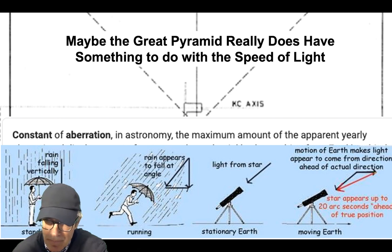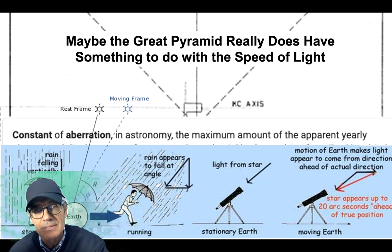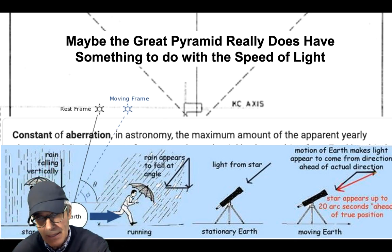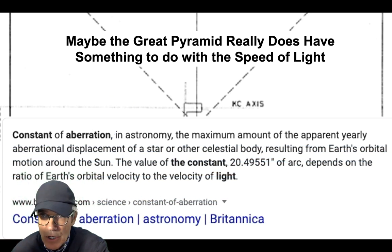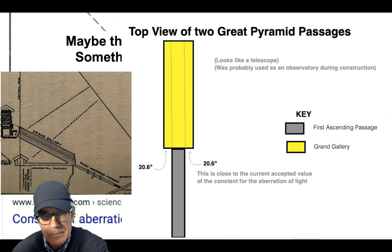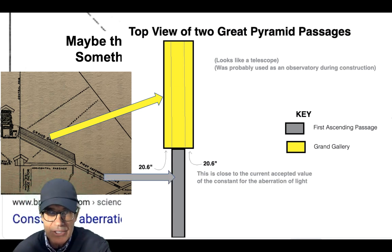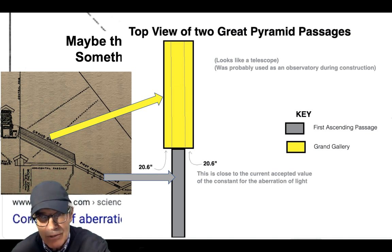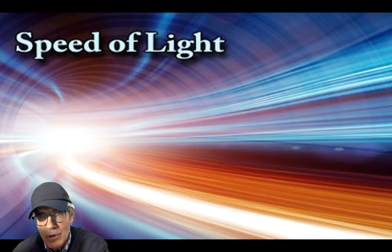If light from a star — if it's stationary — it goes straight into the telescope. But if the earth is moving, you've got to account for that. There's the top view of the Great Pyramid. The yellow is the grand gallery, and there's a top view of the first ascending passage. It looks like a telescope, and that's because the Great Pyramid was used as an observatory. So the overlap on both sides of the grand gallery is just about the aberration of light. Maybe that's a coincidence, but let's think about this.